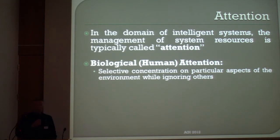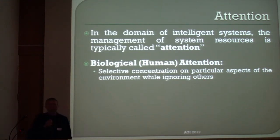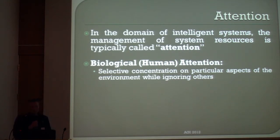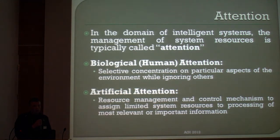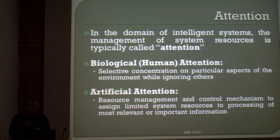Just to start with some definitions: in the domain of intelligent systems, the allocation of resources is typically what we call attention. Biological human attention, for example, is the selective concentration on particular aspects of the environment. If we turn this over to artificial intelligence, the problem is resource management — assigning limited system resources for processing the most robust and relevant information.